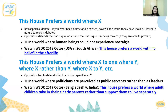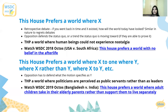Similarly, in the motion 'this house prefers a world where adult children take in their elderly parents rather than support them to live separately,' it's very clear what both teams have to defend. Try setting that debate up yourself and then watching Bangladesh versus India in the World Schools 2019 final.